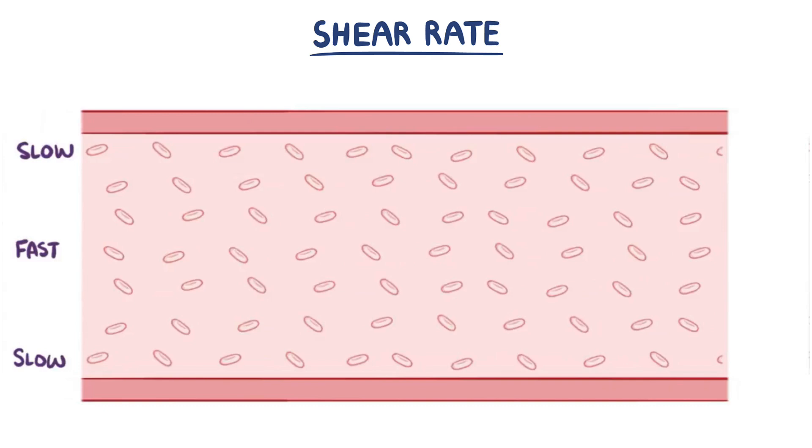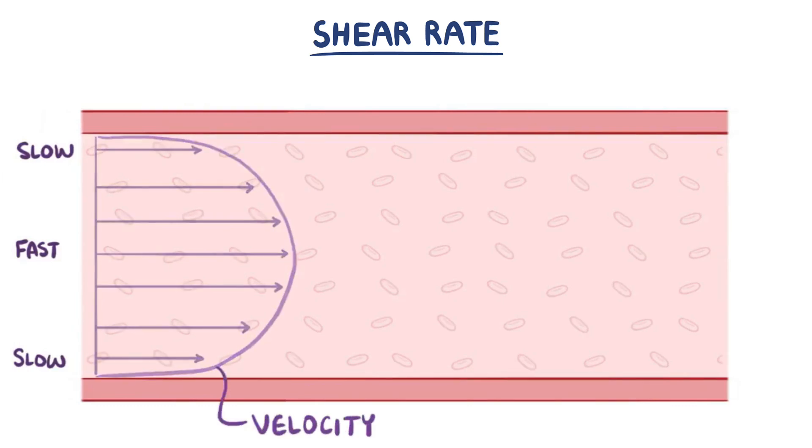And if we freeze this and then plot those velocities, we'll notice that the difference between adjacent velocities is parabolic, meaning that as you move away from the walls, velocity at first jumps up pretty quick, but as you get near the middle, the change in velocity is actually pretty low.